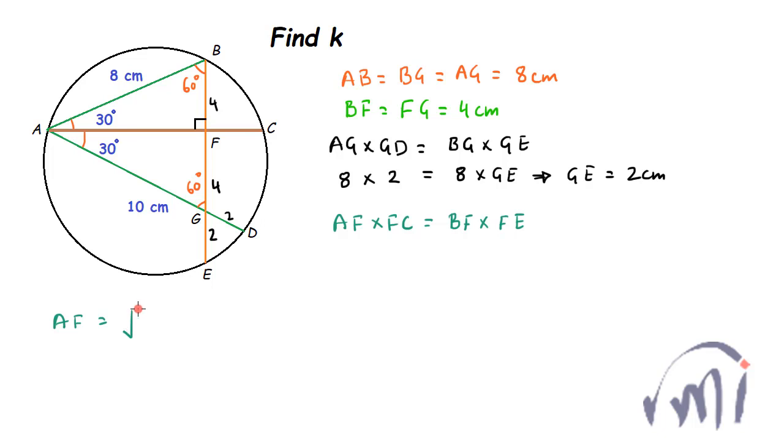AF will be equal to square root of 64, 8 square minus 4 square, so this will be equal to square root of 8 minus 4, that is 4 multiplied by 8 plus 4, that is 12. So this will be equal to 4 root of 12, so this 12 can be written as 4 multiplied by 3 and then if I take square root, it will be 4 root of 3.